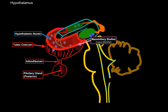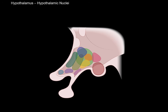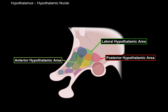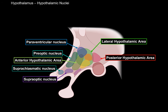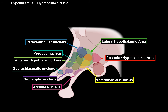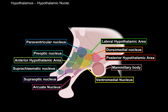Looking at the hypothalamic nuclei in a side view, they're arranged into the lateral, posterior, and anterior hypothalamic areas. Key nuclei include: the paraventricular nuclei associated with pain; the preoptic nucleus, which decreases heart rate and blood pressure; the suprachiasmatic nucleus, part of the circadian rhythm and sleep-wake cycle; the supraoptic nucleus for thirst; the arcuate nucleus, which regulates release of many hormones; the ventromedial nucleus for the satiety feeling; the mammillary bodies; and the dorsomedial nucleus for sleep regulation and food intake.